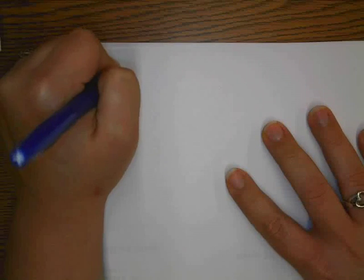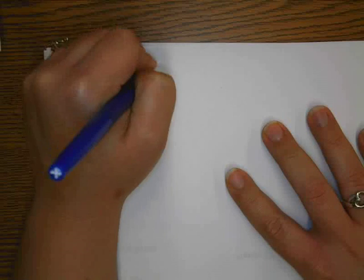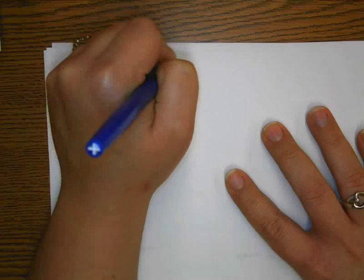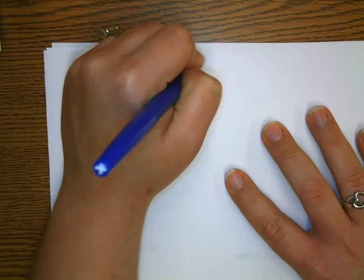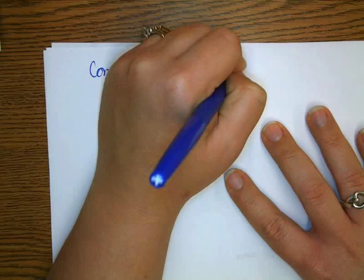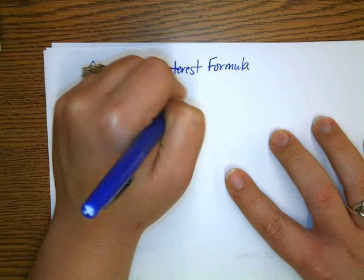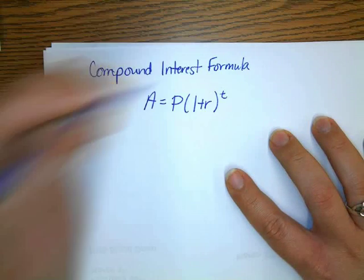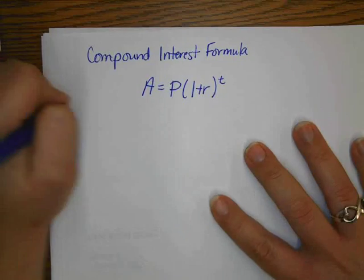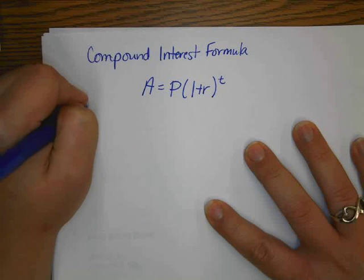Alright. One formula that you may have seen before is the compound interest formula. And that is when A equals P times 1 plus r all to the t power.